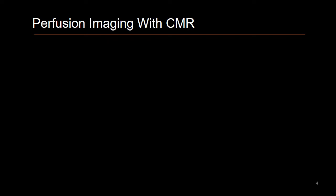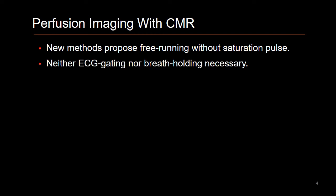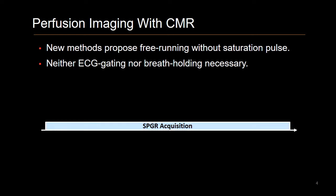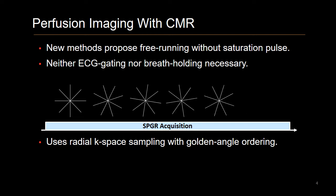As an alternative, several new studies have investigated the use of free-running sequences without a saturation pulse. By doing so, they remove the need for ECG gating and breath holding. These sequences replace the single-shot Cartesian acquisition with an SPGR-based T1-weighted acquisition and accelerated radial K-space sampling with golden angle ordering, which samples continuously across the whole cardiac cycle.